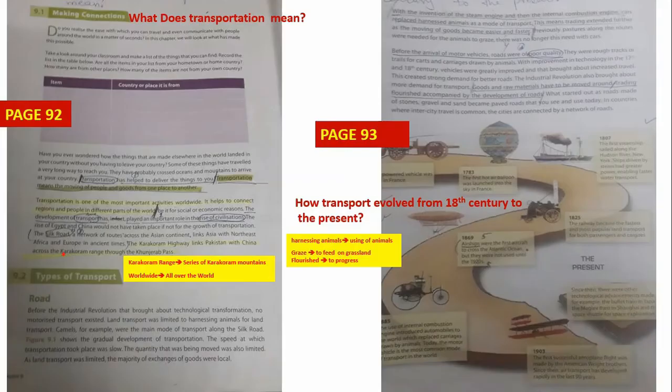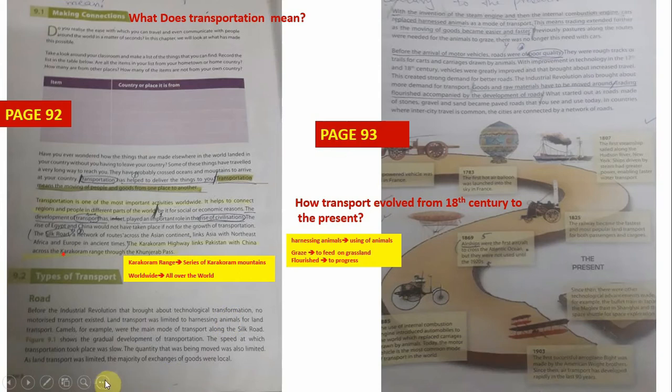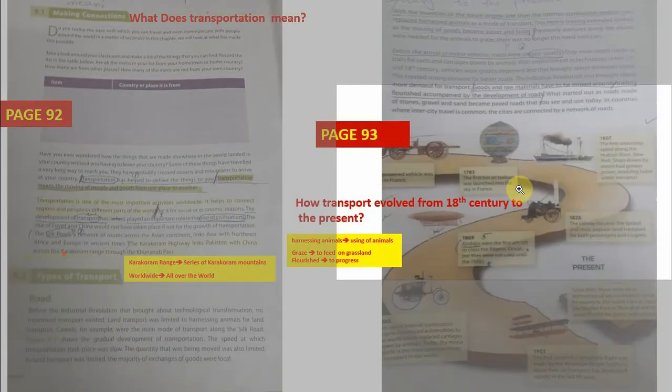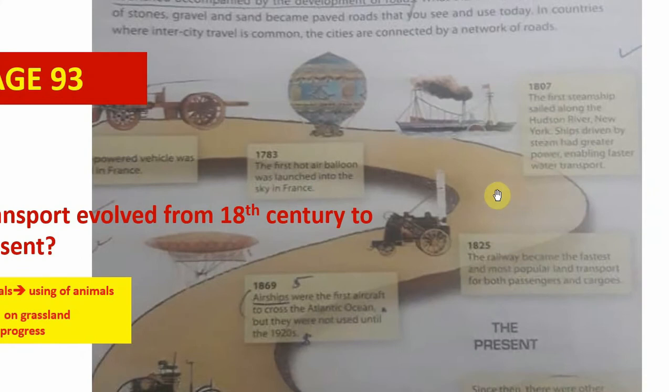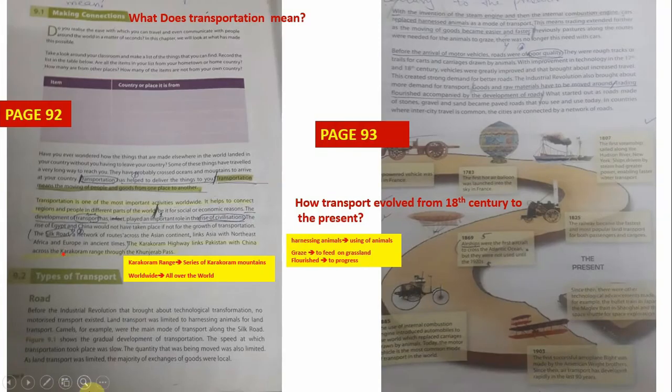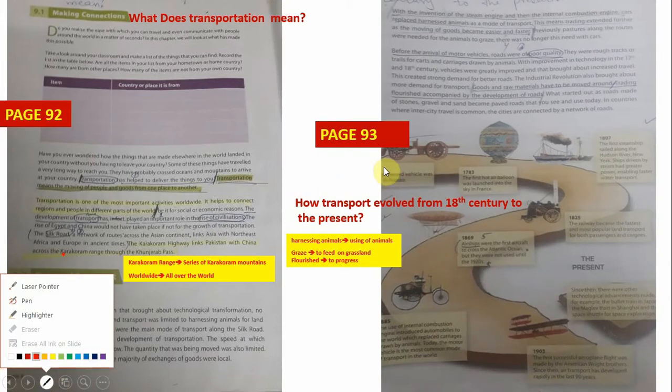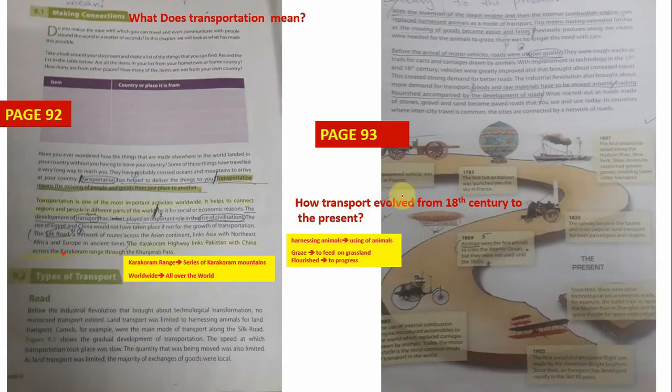By the passage of time people have evolved many new modes of transportation. As you can see on this page there's a timeline route through different years in different eras where people have evolved different machineries. Just as in 1769 a steam powered vehicle was invented in France. It means the first machine was used in 1769.